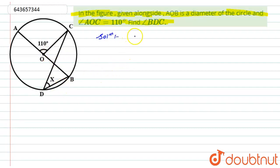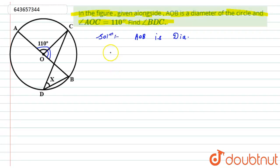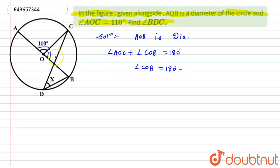Since AOB is a diameter of the circle, AOB lies in a straight line. Therefore, angle AOC plus angle COB equals 180 degrees. Substituting, angle COB equals 180 degrees minus angle AOC, which is 110 degrees, giving us angle COB equals 70 degrees.